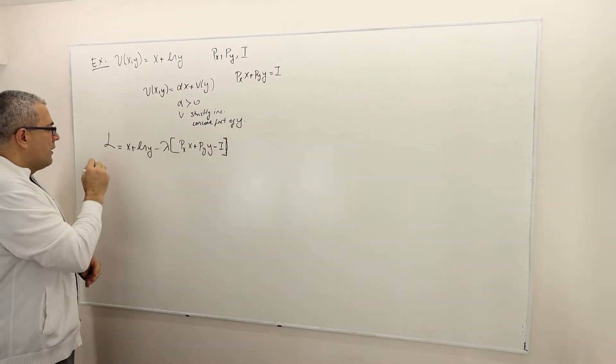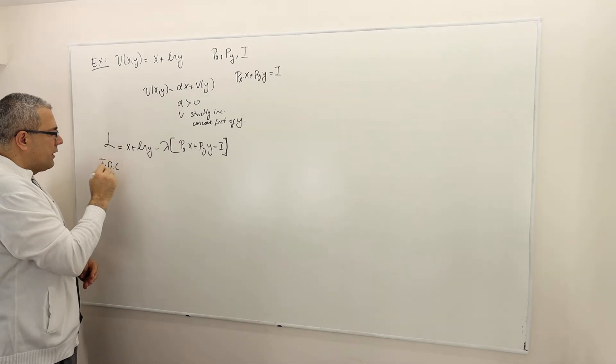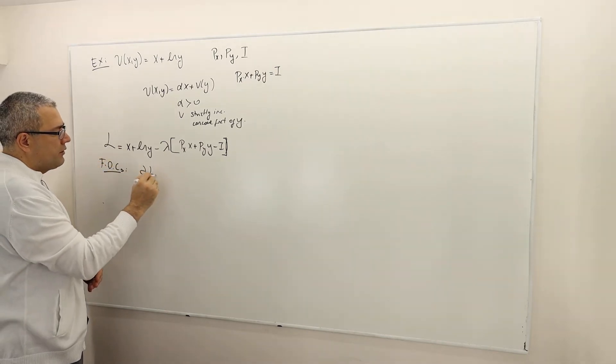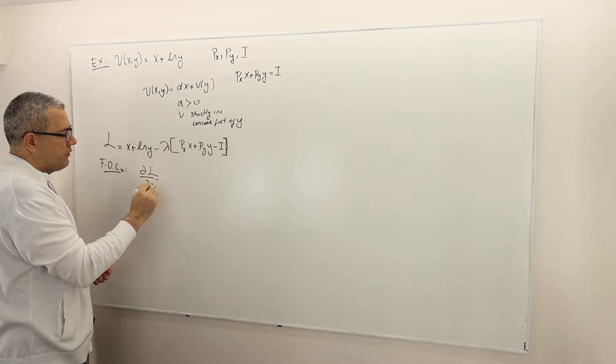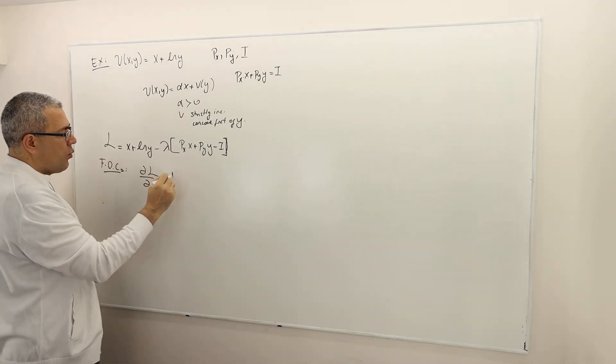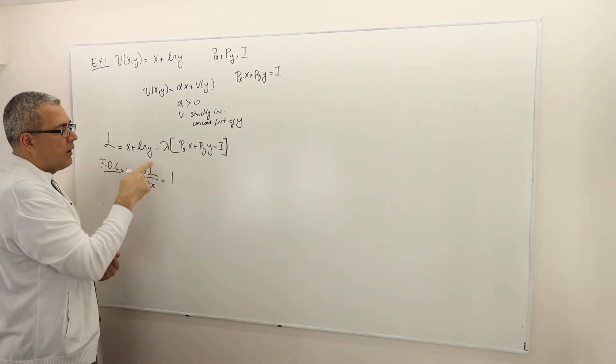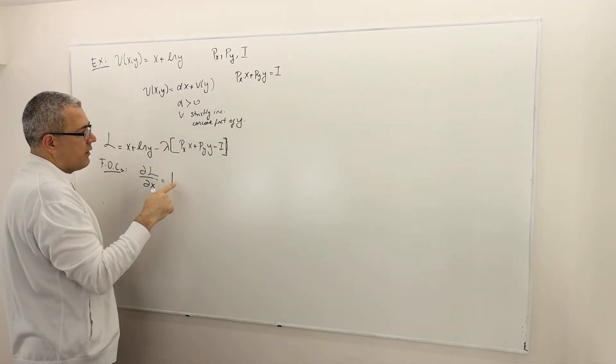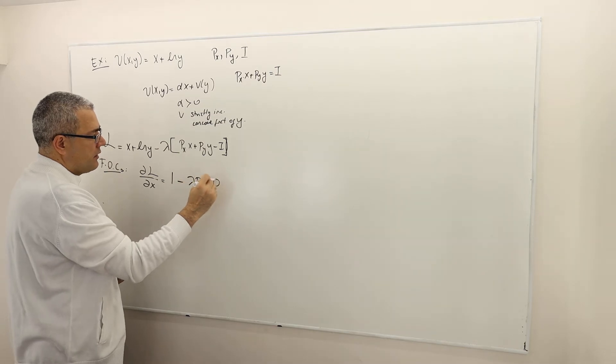The first order conditions are as usual the partial derivative of the Lagrangian with respect to the first variable x. So it's going to give me basically one. ln y, its derivative with respect to x is zero minus lambda px equals zero.